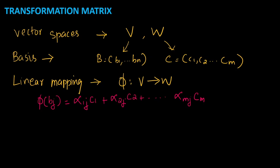These alpha values are called coordinates, where j goes from 1 to N. This linear combination can be rewritten as A_phi times C, where A_phi is the transformation matrix — the representation of the transformation from V to W.